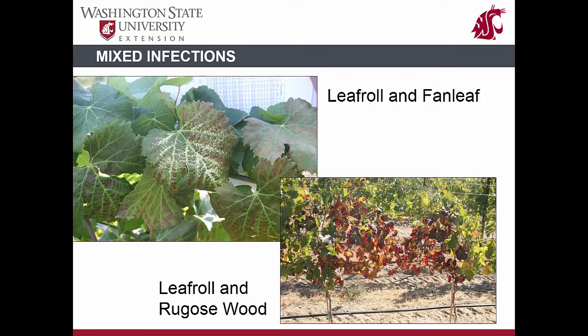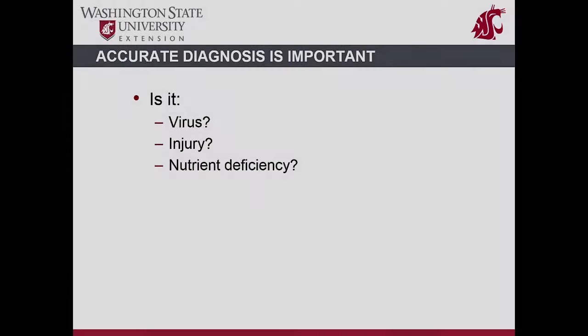Due to the perennial nature of the grapevine, mixed virus infections are common. For example, one plant can have mixed infections of different grapevine leaf roll-associated viruses. In addition, grapevines can have different grapevine leaf roll-associated viruses and viruses associated with rugose wood complex or fan leaf virus. Some mixed infections result in synergistic interactions leading to severe disease symptoms, reduced vigor, and higher yield losses.